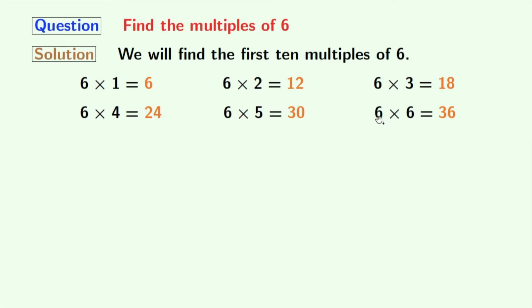Multiplication of 6 with 6, we get 36. 6 times 7 gives us 42. 6 times 8 gives us 48.